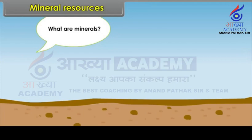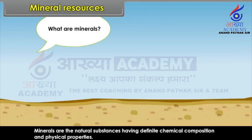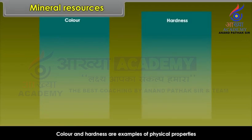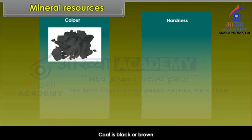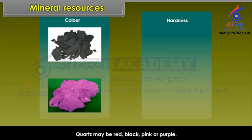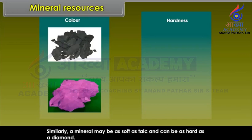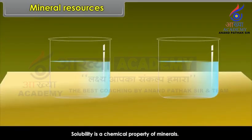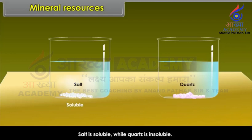What are minerals? Minerals are the natural substances having definite chemical composition and physical properties. Colour and hardness are examples of physical properties — like coal is black or brown, quartz may be red, black, pink or purple. Similarly, a mineral may be as soft as talc and can be as hard as a diamond. Solubility is a chemical property of minerals; for example, salt is soluble while quartz is insoluble.